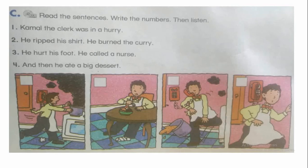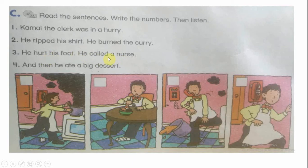Let's move to another exercise. Read the sentences and write the number, then listen. Number one: Kamel the clerk was in a hurry. Number two: He rubbed his shirt. He burned the curry. Number three: He hurt his foot. He called a nurse. Number four: And then he ate a big dessert.